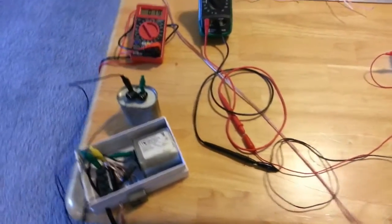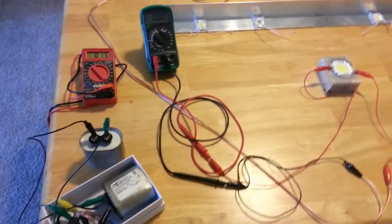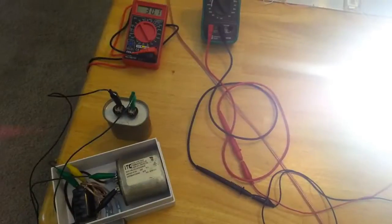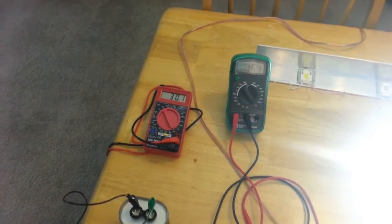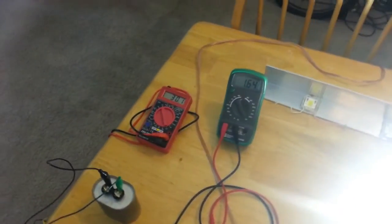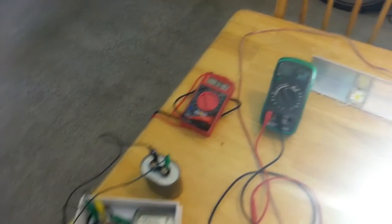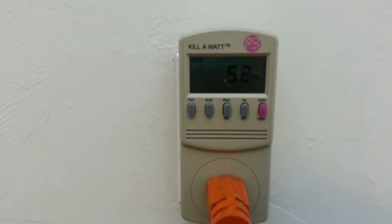So I'm going to take a second and show you the power consumption from the wattmeter on the wall. It's running at 2 amps on the charge, 30 volts, 1.65 amps. Multiply those together, that comes out to around 50. And we're pulling 53 watts from the wall.